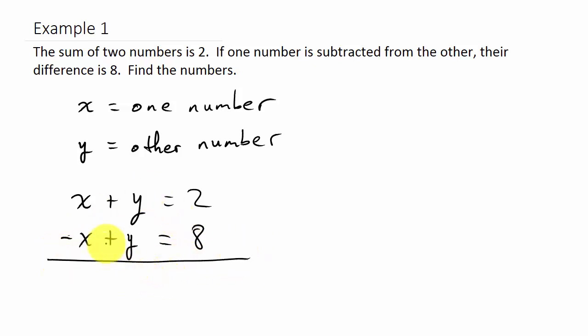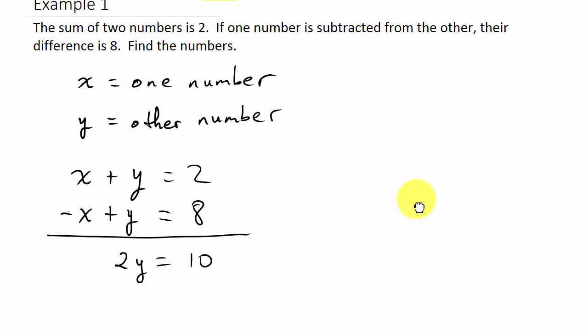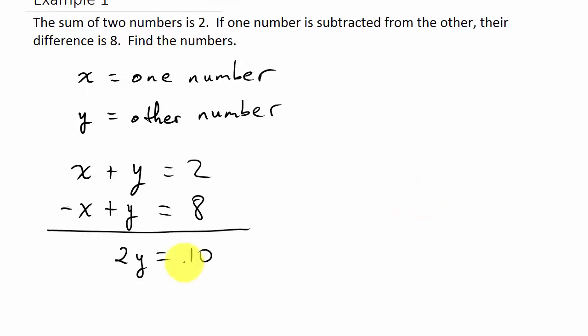Okay, so let's add them. So that's going to give me what? Well, the x's go out, and y plus y is what, two y, you see that, equals two plus eight is ten. And then if I solve this, I'm going to divide each side by two, and so I get y equals five.